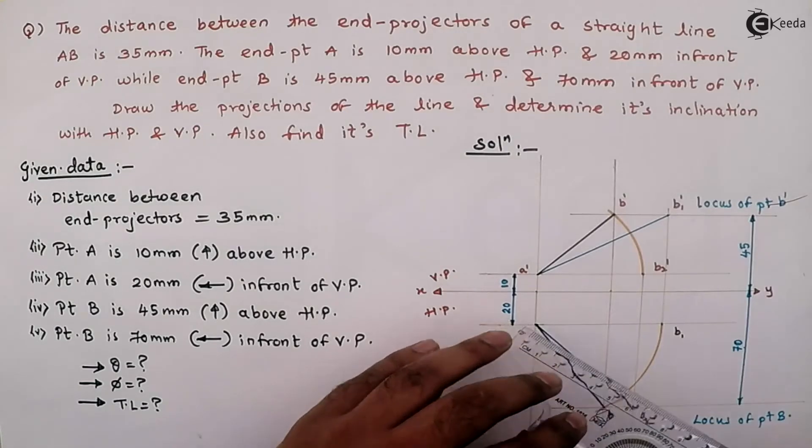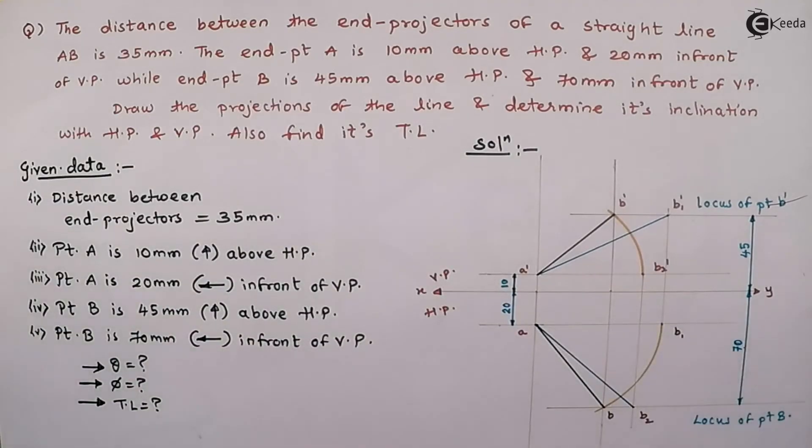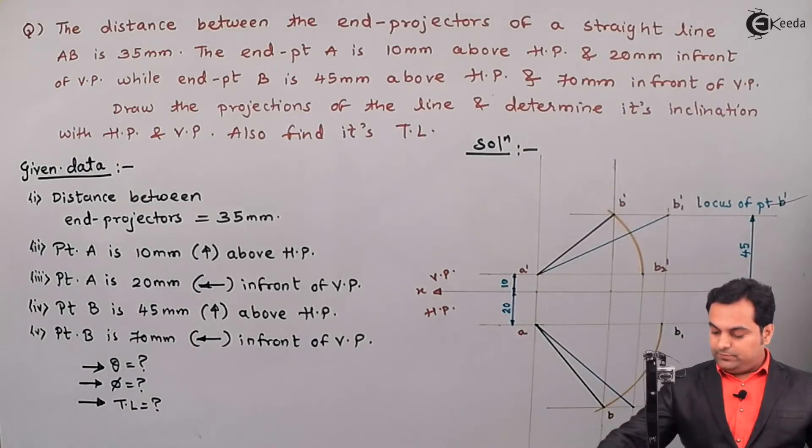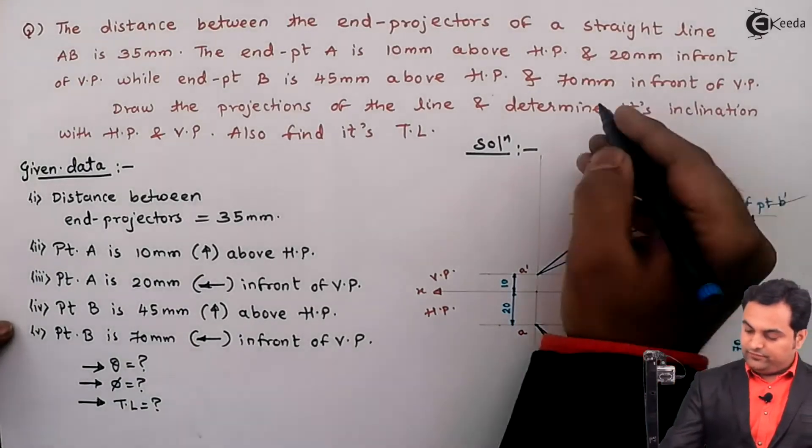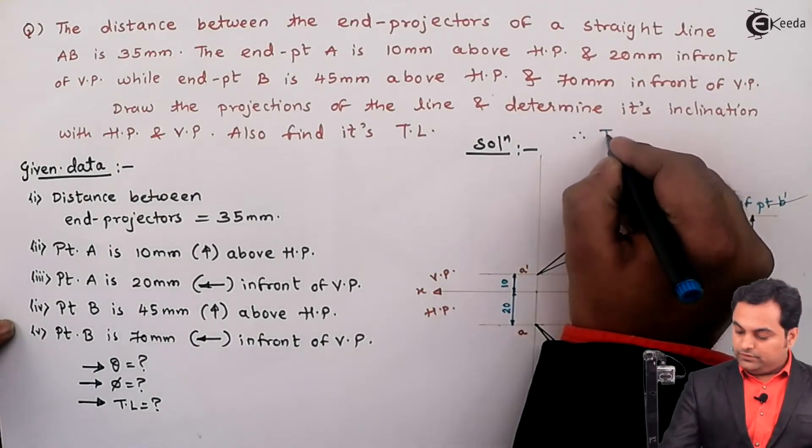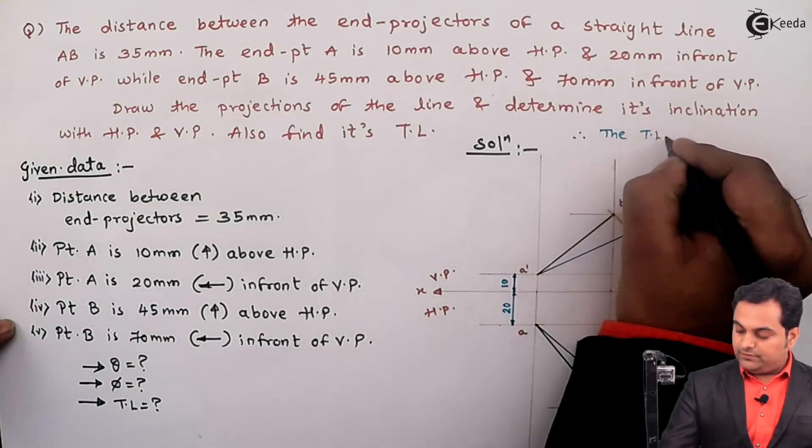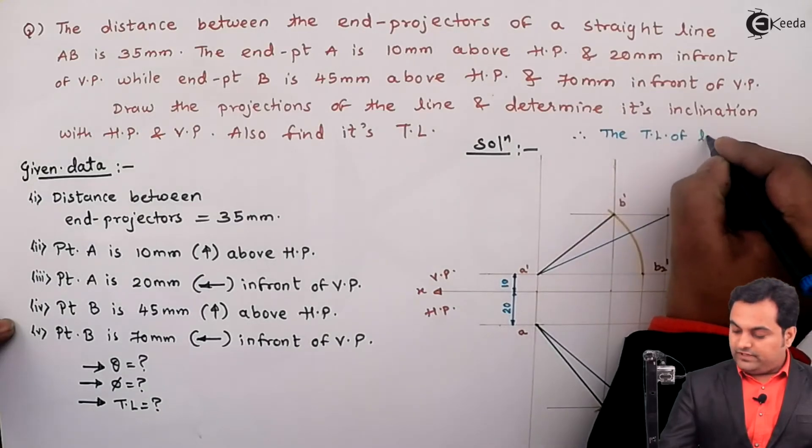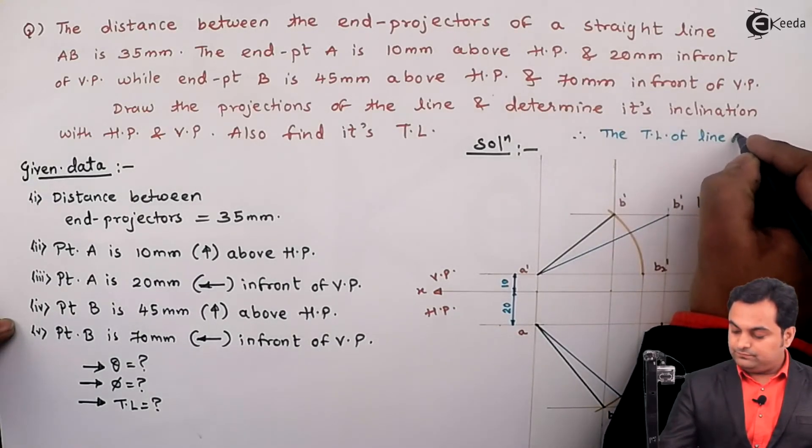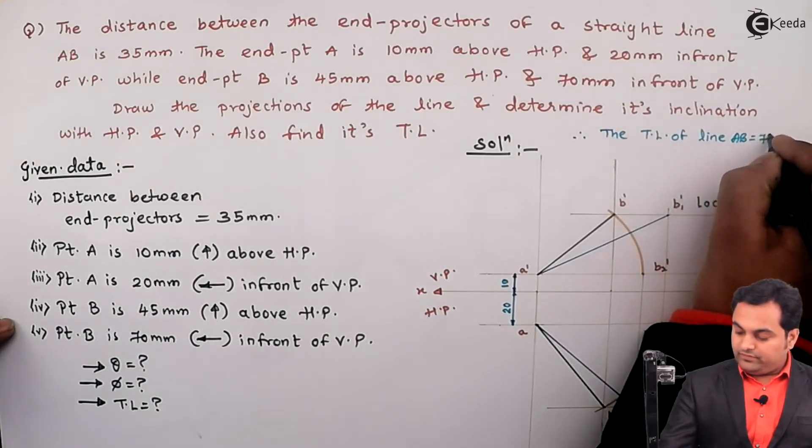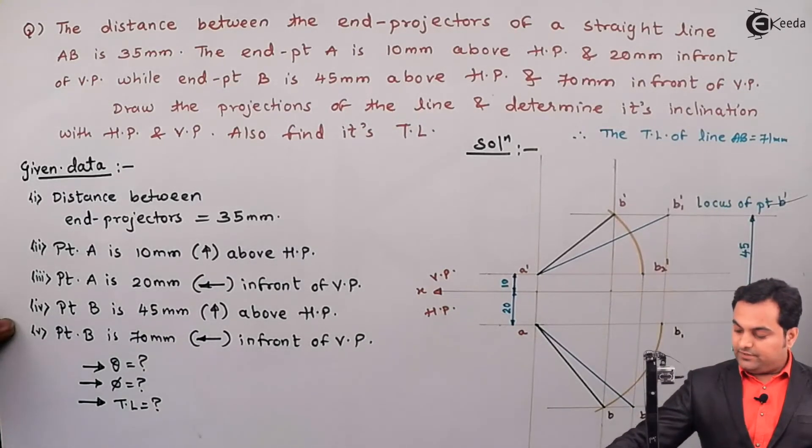I am getting it as 71 mm and even if the answer is 70 or 71, 72 then also it would be correct. So therefore the TL which is the true length of line AB is equal to 71 mm which I am getting here.